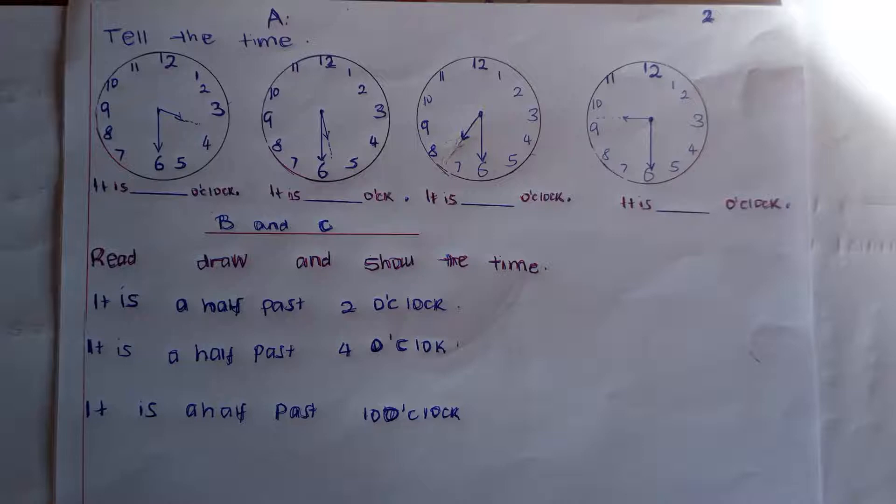Then lastly, still the long hand is in 6 and the short one has passed 9. So, tell that time. Good. Remember to draw very good circles. Remember, 6 and 12 should face each other. Then, 9 and 3 should also face each other.